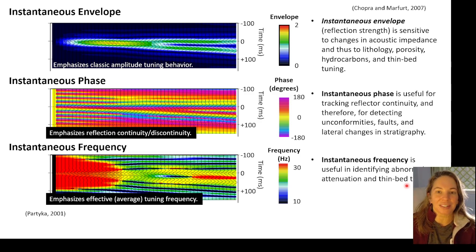And so this is a nice summary of instantaneous envelope, instantaneous phase, and instantaneous frequency from Prardika in 2001, and kind of just very nicely summarized by Chopra and Marfer in their textbook in 2007.